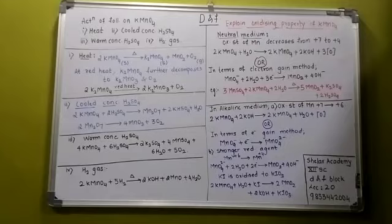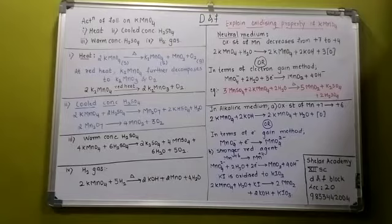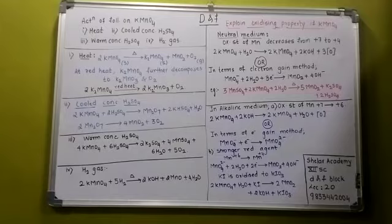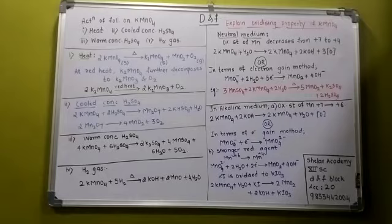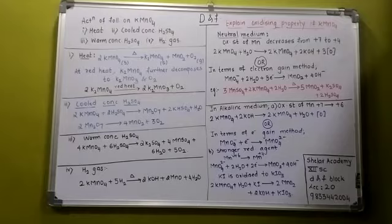You can see the reaction with water. In the neutral medium, when it is reacted with water, it is converted to K-MnO2 plus KOH plus 3 nascent oxygen atoms are given. Or the same reaction can be written as - it should be K-MnO2, right?